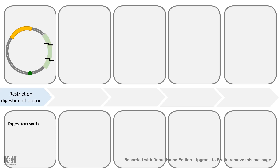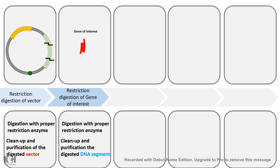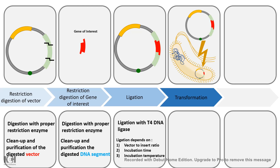The cloning workflow begins with restriction digestion of the vector using a specific restriction enzyme present in the multiple cloning site. The gene of interest is cut with the same enzyme. Then the ligation step joins the gene of interest with the plasmid backbone, inserting it into the vector.